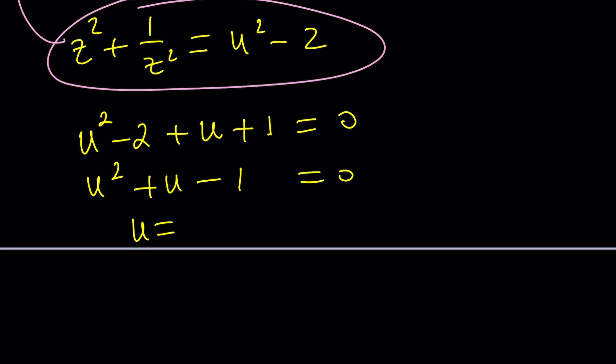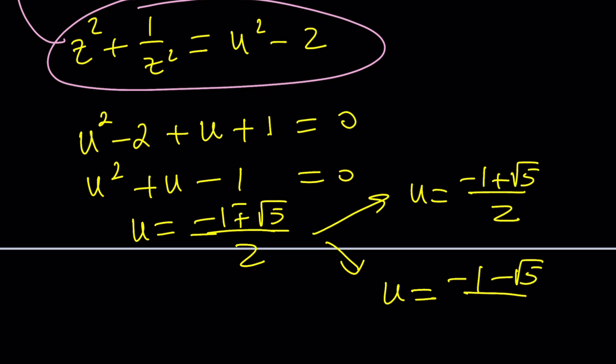Both of these can be plugged into the original equation. We can replace z squared plus one over z squared with this, and z plus one over z with u. That becomes u squared minus two plus u plus one equals zero, which gives us u squared plus u minus one equals zero. By using the quadratic formula, we get u equals negative one plus or minus the square root of five divided by two. Do you smell the golden ratio?